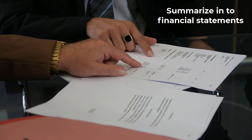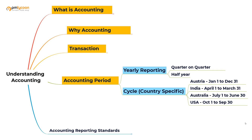To make transactions easy to understand for others, there are certain standards we need to follow when summarizing them. We also need to know how often we need to summarize them — whether for a month, a quarter, half-yearly, or a year. This is where we get something called the accounting period.